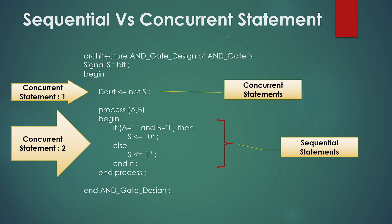Let's take the same example. It is the same code we used in our last session where we have two inputs, input A and input B, and one output D out. We have one internal signal S as well, where signal S was the output of a NAND gate, and later that signal S is wired up with the NOT gate, and the output of the NOT gate is connected to the output D out. For this design we had written both types of statements in our VHDL code, which are concurrent statements and sequential statements.